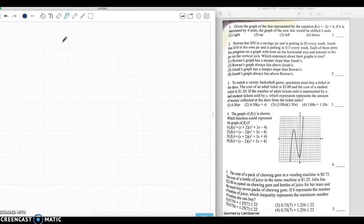Number 4. This may look daunting, but it is not. It's quite easy. The graph of f(x) is shown. Which function could represent the graph of f(x)? First, we want to look at this y-intercept. We know that the y-intercept would be f(x) equals ax cubed plus bx squared plus cx plus d.